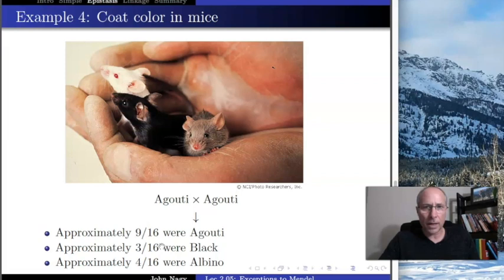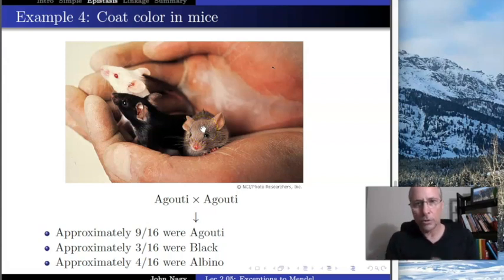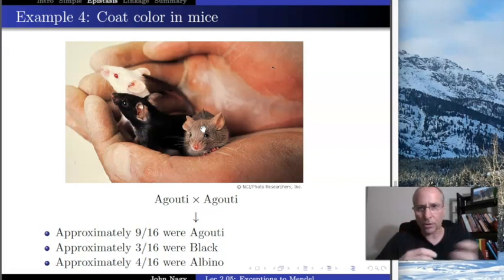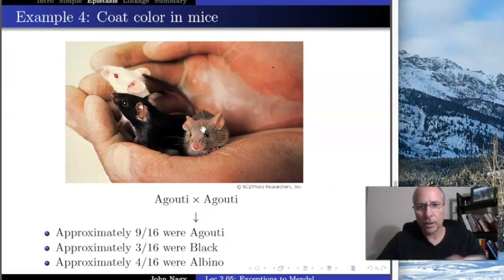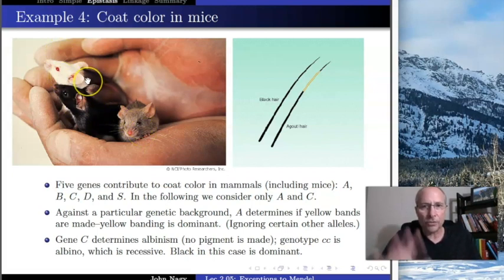The coat color determinants in these mice are very similar to the hair color determinants in humans. Textbooks often say black hair is dominant to blonde, but we're going to demonstrate that is absolutely false — we know the genetics reasonably well. There are at least five different genes that contribute to hair color.